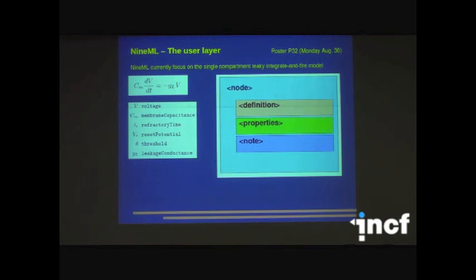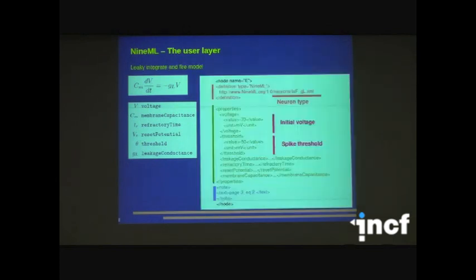Now let's look at some examples for user layer and abstraction layer. And we have a poster today presenting more detail of the user layer. I encourage everyone to go. For a neuron, for a single leaky integrate-and-fire neuron, in NineML it's a node. It's a top-layer element. And the node has several sub-elements: definition, properties, and an optional note. This shows you the complete code for the user layer for the leaky integrate-and-fire neuron. As you can see here, this is a node. This name is a user-given name. You can give any name that later when you need to refer to this neuron, you just use this name.